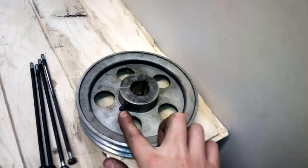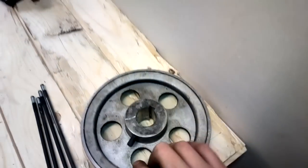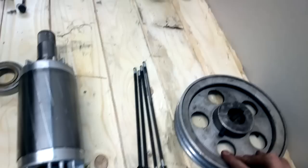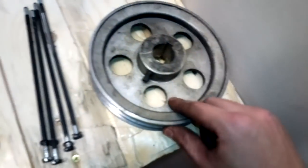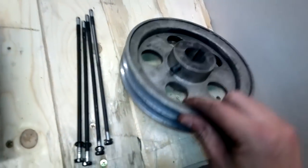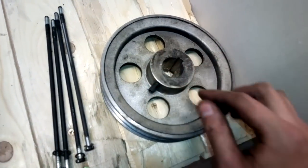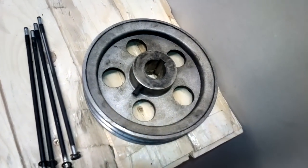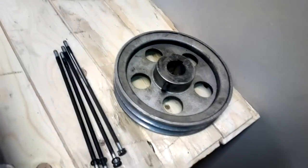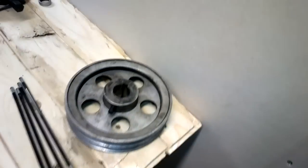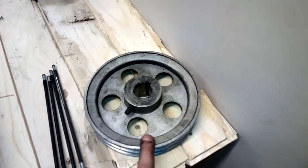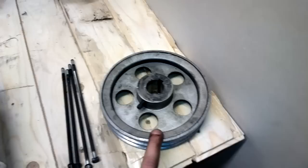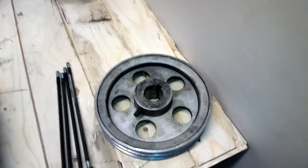I unscrewed this screw that holds the pulley in place, and then I tried to use my puller on the aluminum wheel. But because this is aluminum, I didn't want to use a lot of force and it didn't come off, so the next thing I did I put some heat on this. I used my propane torch to heat this up a little bit and that helped a lot. It came out real nice.